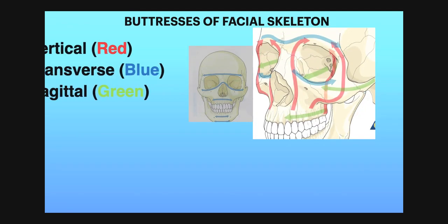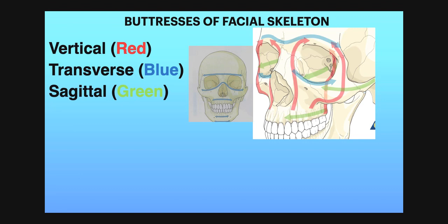The buttresses of the facial skeleton include vertical, transverse, and sagittal buttresses. Buttress represents the pillars of the face. The red arrows show vertical buttresses: nasomaxillary buttress, zygomaticomaxillary buttress, and pterygomaxillary buttress.